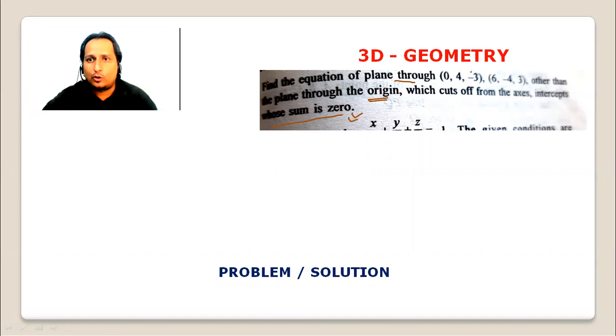The equation can be found from two or three points. When intercept with coordinate axis sum is zero, the best approach is to assume the plane equation as x/a + y/b + z/c equals to 1.